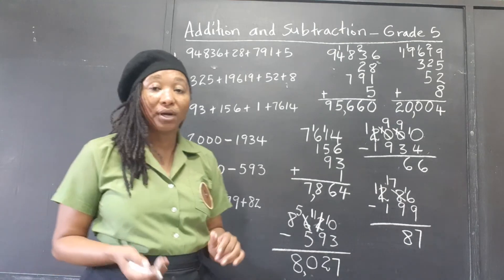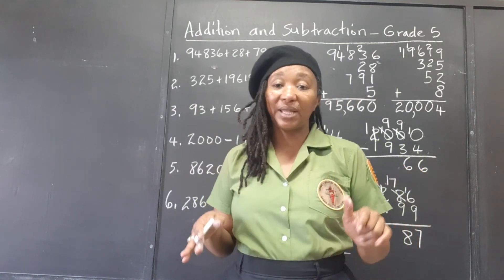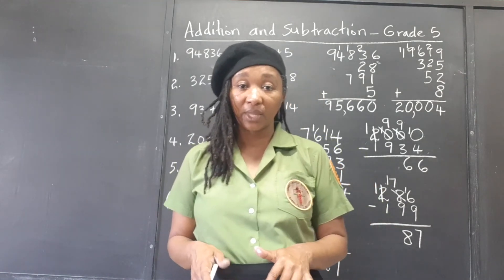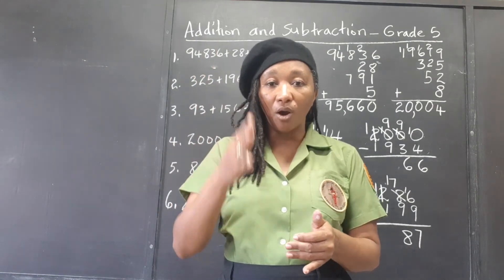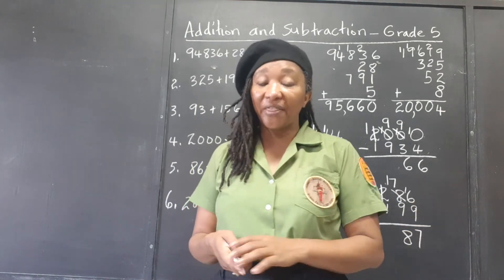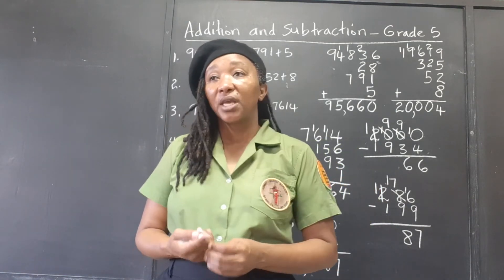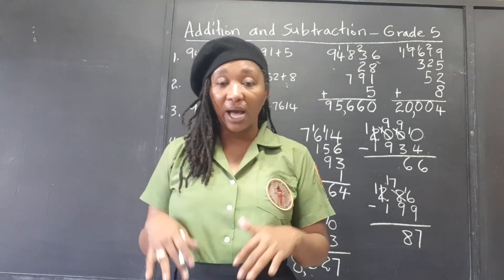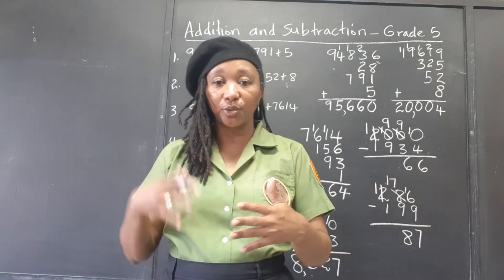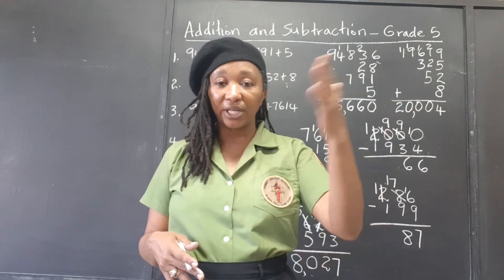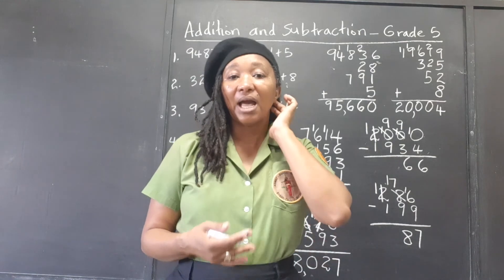The important thing when doing addition and subtraction of whole numbers: you must line up the place values. Line up all the ones under each other, all the tens under each other, all the hundreds, all the thousands, and so on. Then make sure you do your calculations correctly. For subtraction, if you end up with a larger number at the bottom, go to the next place value, take one, and convert it to the place you need — as ten groups of the smaller unit — then do your subtraction.